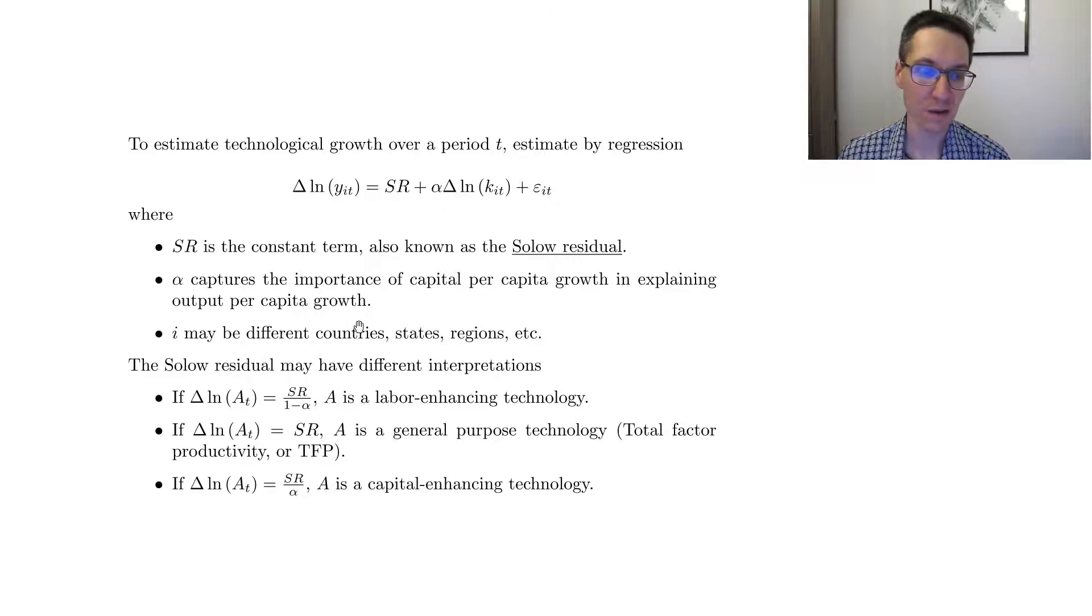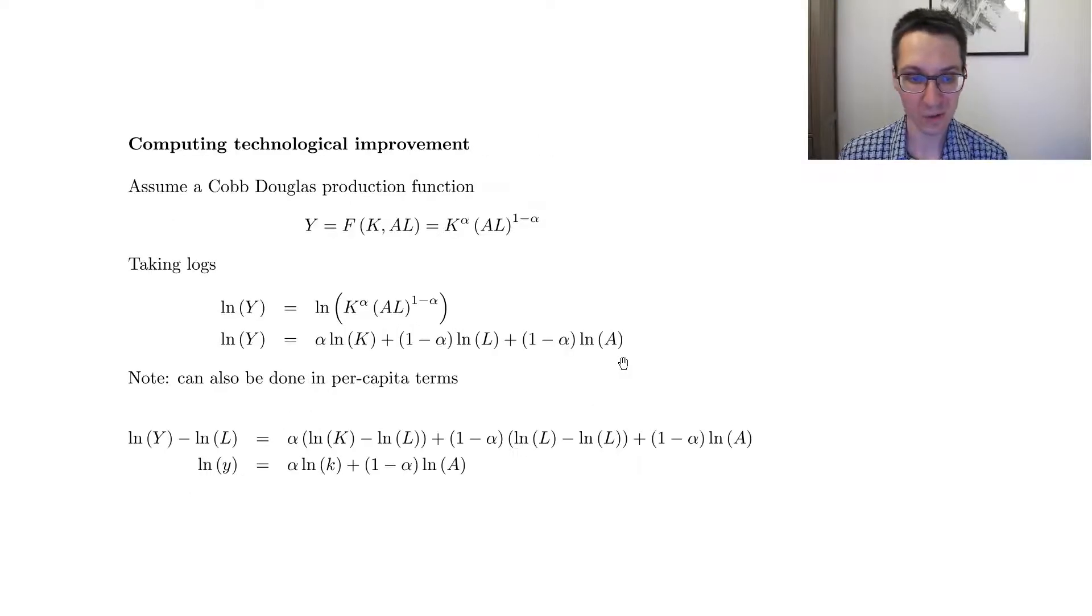And here, alpha again captures the importance of capital in per capita growth in explaining output per capita growth. And as we can remember too, so it measures essentially the role played by capital in production. So once I have estimated this, what I get is some value for SR, so the Solow residual, and some value for alpha.